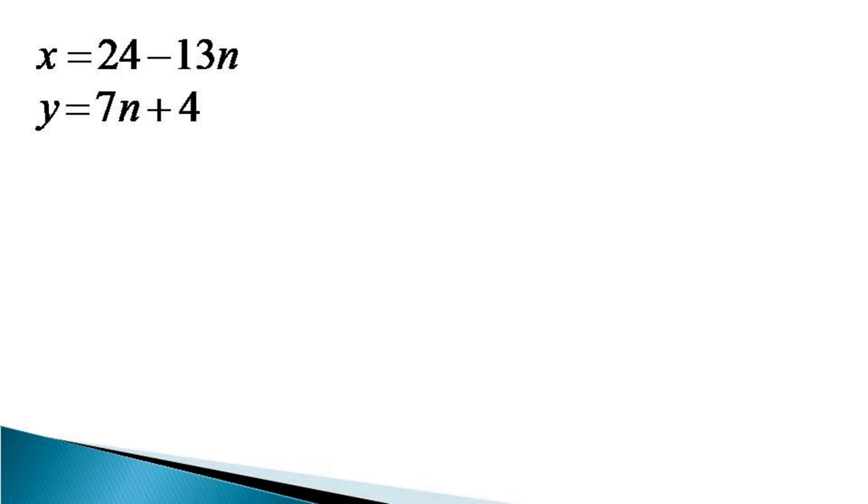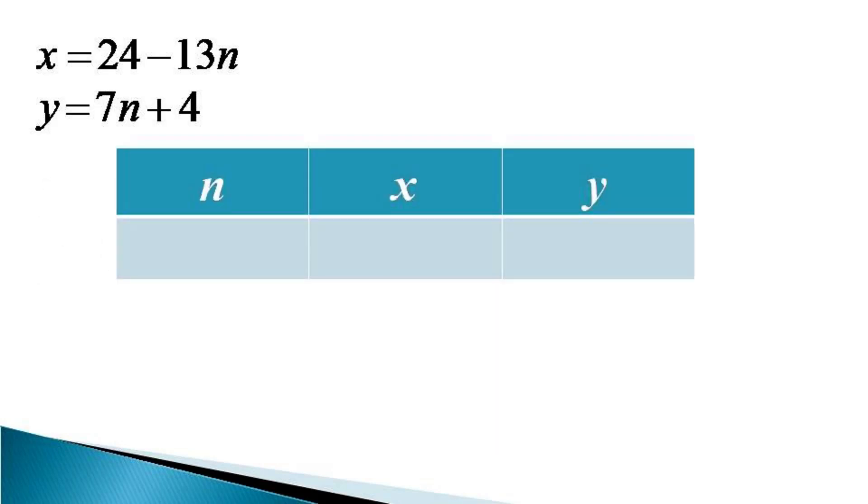Now the value of n can vary from minus infinity to plus infinity. We just check for the negative values of n. So for n less than 0, all the values of y will be negative, which our condition says should not be, and y is a positive number. So all the negative values of n are discarded. We start checking from n = 0 onwards.